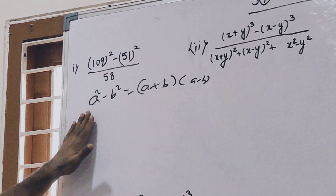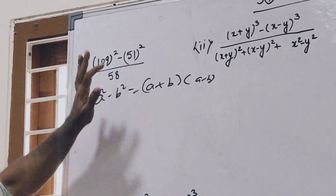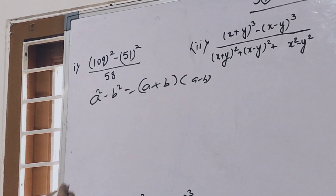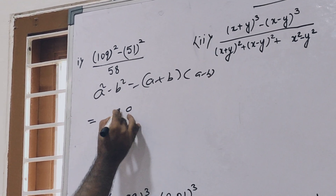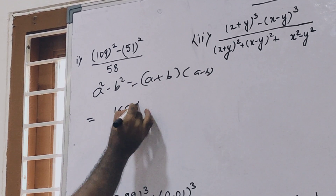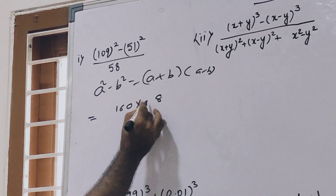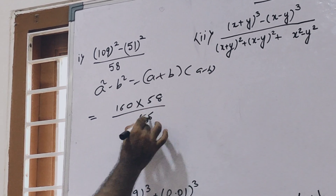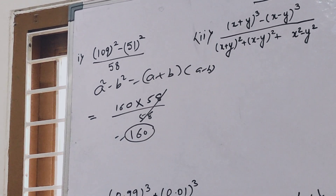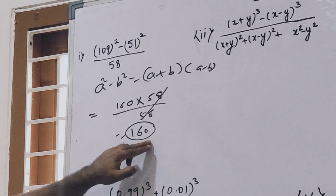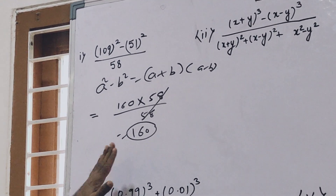When this type of question comes, just apply this technique and formula. So 109 squared minus 51 squared: a plus b is 109 plus 51, that is 160. Into a minus b, that is 109 minus 51, which is 58. Now 58 cancels out, and your answer is 160.